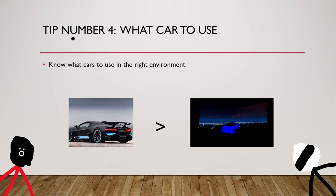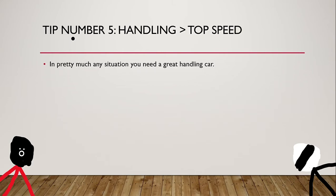Tip number five is handling is better than top speed. In pretty much any situation you need a great handling car. Now we're excluding drag from this, I already told you guys. You need a great handling car because in circuit race or city circuit, even highway, you need a good handling car to take the first turn correctly. And sometimes top speed isn't it. Because before the chassis update, the Koenigsegg Absolute was a beast but it couldn't turn.